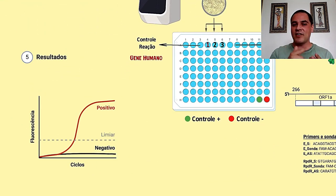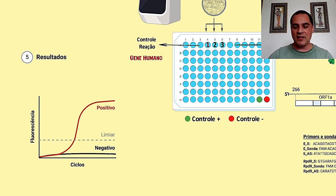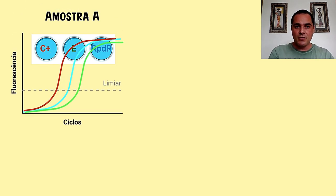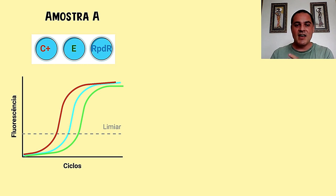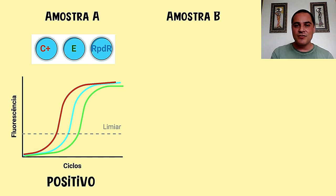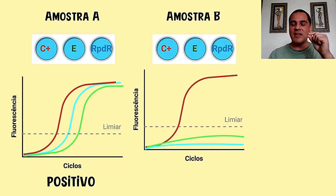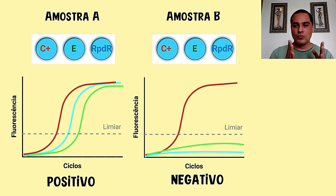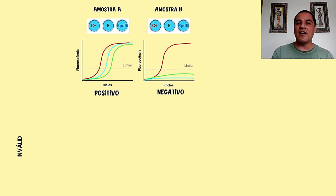Se a amostra for positiva, se teve amplificação, a gente vai ter a presença dessa curva aparecendo acima do limiar, e abaixo do limiar o que for negativo. Vamos para dois exemplos: um caso positivo e um negativo. Na amostra A, em vermelho a amplificação do gene controle humano, e em verde e azul os dois genes virais. Se o paciente é positivo para o novo coronavírus, eu vou ter amplificação obrigatória do gene humano — que garante que o material estava ok — e amplificação dos dois genes virais. No caso de um paciente negativo, apenas a amostra do gene humano tem que ser positiva. Caso o gene humano não seja positivo, a reação não aconteceu, dando resultado inválido ou indeterminado.